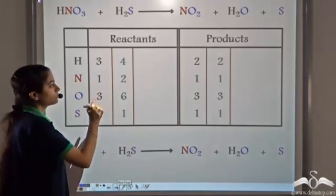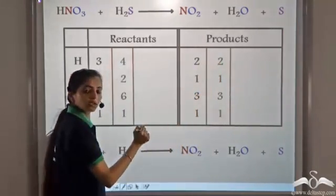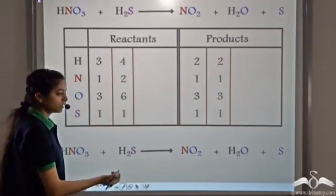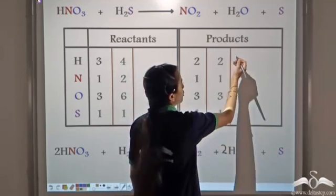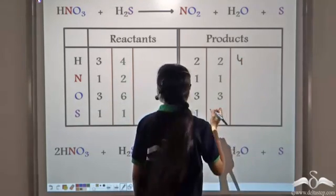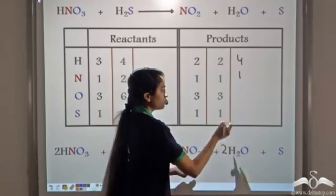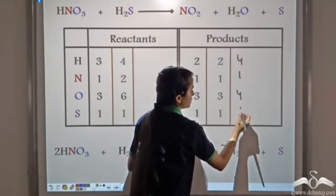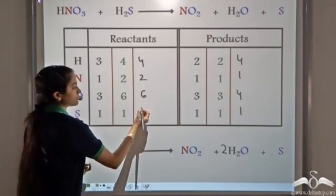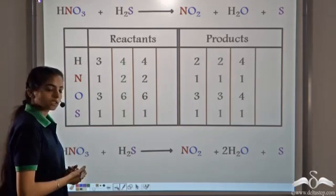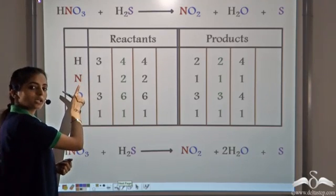Now we have 4 atoms of hydrogen on both sides. We simply multiply water by 2, so taking 2 molecules of water gives us 4 atoms of hydrogen, 1 atom of nitrogen, 4 atoms of oxygen, and 1 atom of sulfur on the product side. No change on the reactant side. Hydrogen is now balanced, but nitrogen atoms are not balanced.